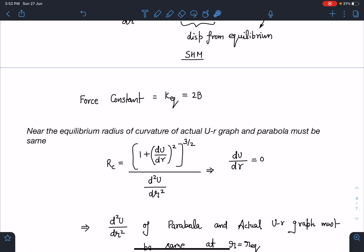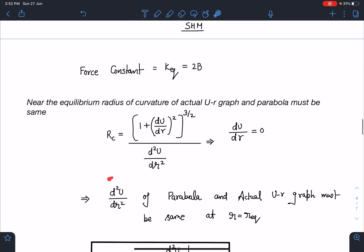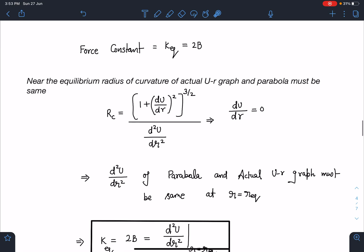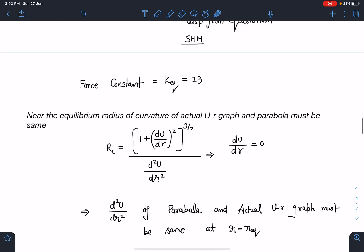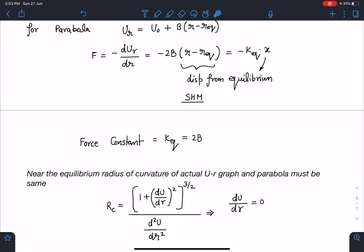I'm just trying to use the concepts of plus-two only. So d²U/dr² of parabola and the actual Ur function must be same at r = r_eq. When we are approximating it with the nearest parabola, this condition will hold true. So k_eq here I can write as 2B, because you can see double derivative - if I differentiate this one more time, I am going to get 2B.